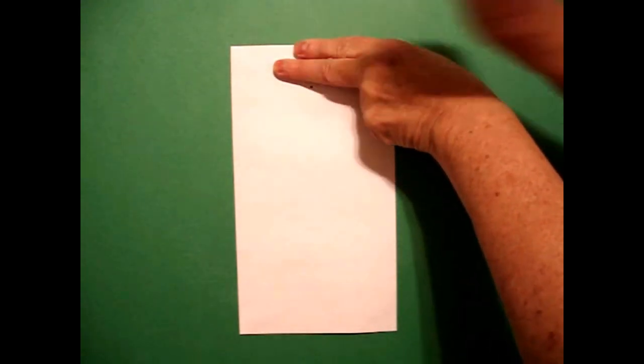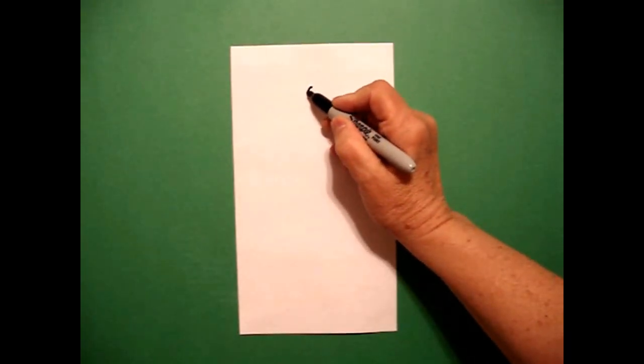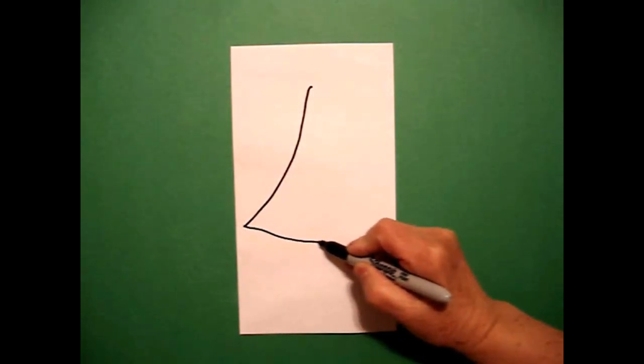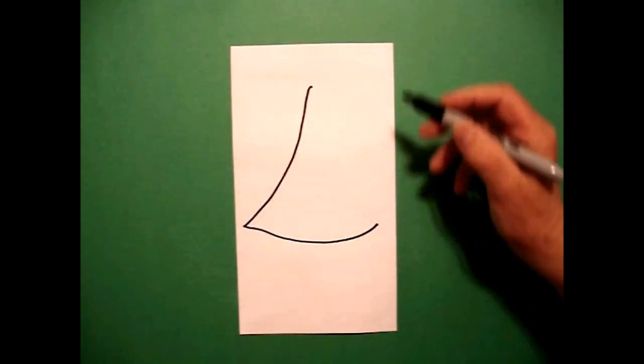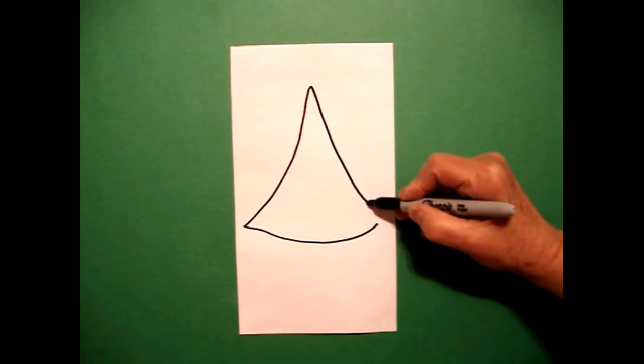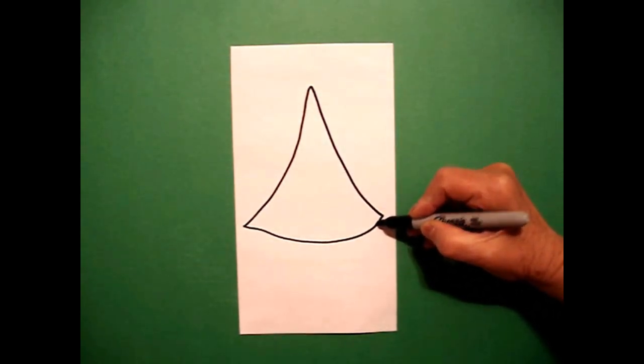Two fingers from the top and put me a dot. And from that dot, I'm going to draw a slightly curved line out on the left, curved line down and over. Come back to the dot and draw a slightly curved line over and connect.